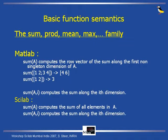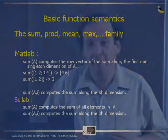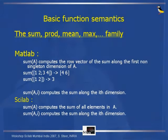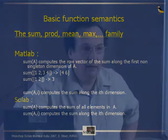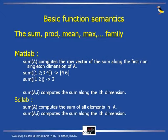Another kind of difference is the semantics of basic functions. There are two families of basic functions that pose problems when going from MATLAB to Scilab. The first family is the sum, prod, mean, and max family. In MATLAB, sum(A) computes the row vector of the sum along the first non-singleton dimension of A. For example, if I have a 2-by-2 matrix and I call sum, I get the vector [4, 6]. And if I put a row vector [1, 2], the result is 3.